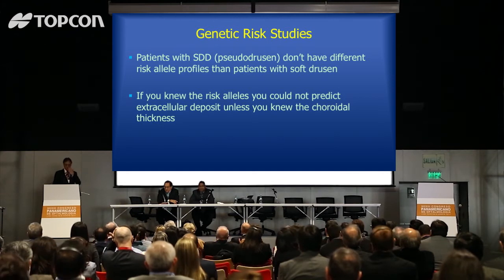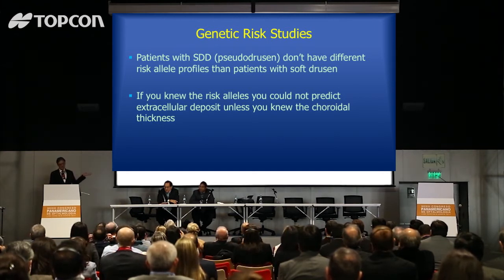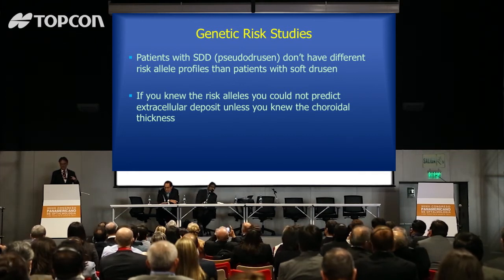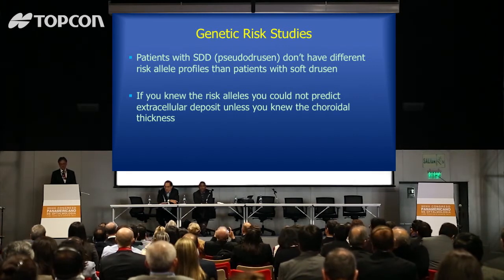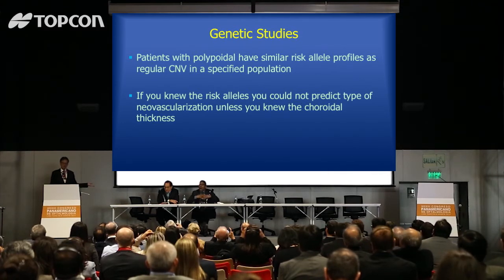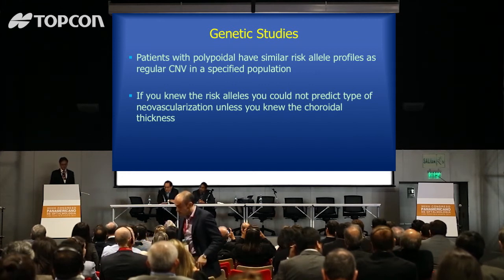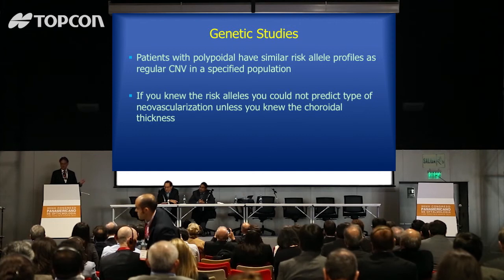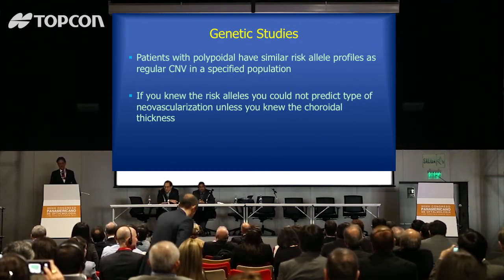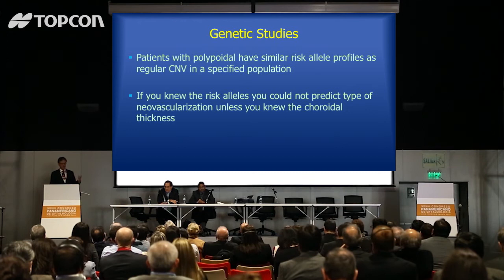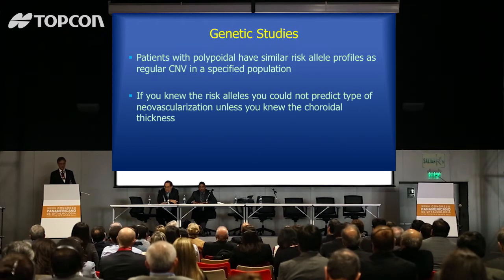We looked at the genetics of all of this. Patients with pseudodrusen have essentially the same genetic makeup as patients with soft drusen. So if I told you the risk alleles of a patient, you couldn't tell me if they had pseudodrusen or drusen — unless I told you how thick their choroid was. Thin choroid would indicate pseudodrusen; moderate or thick choroid would indicate regular drusen. Patients with polypoidal are often associated with thick choroids, but have the same alleles as regular CNV patients. You couldn't tell if they had CNV or polypoidal unless I told you their race or how thick their choroid was.